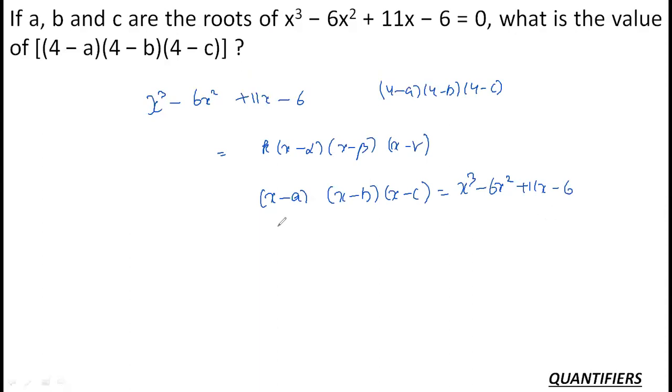Now if I compare it with the value I need - (4 minus a)(4 minus b) and (4 minus c) - you can see that it is very relatable. I just need to replace x with 4, and I will get my answer. So my answer would be: 4 cubed minus 6 into 4 squared plus 11 into 4 minus 6. So, 64 minus 96 plus 44 minus 6 equals 108 minus 102. So the answer is 6. This is my required answer for this question.